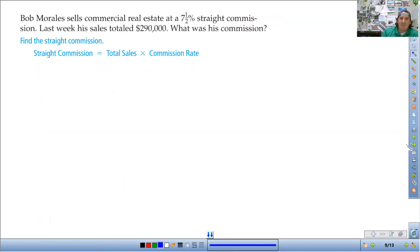So let's look at an example of how to calculate commission. Bob sells commercial real estate at a 7.5% commission rate. Last week his sales were $290,000. So first thing I'm going to do is take 7.5%, divide it by 100. So my commission rate is 0.075. Now I can do the rest of it. So the commission rate is going to go in there, and I'm just going to multiply that by total sales.